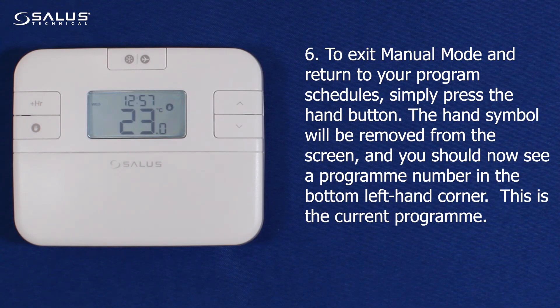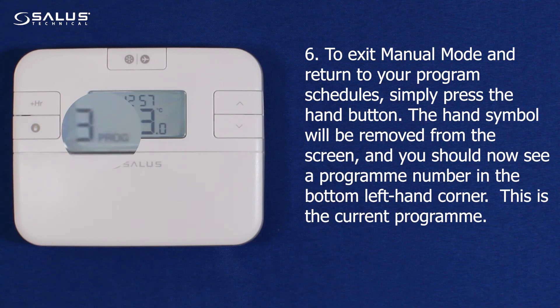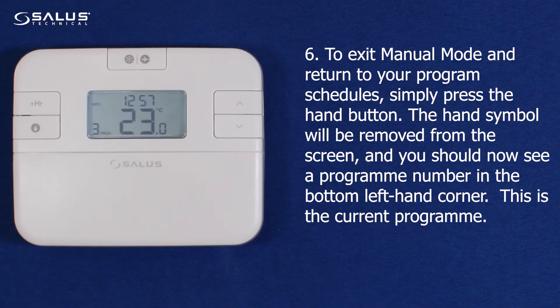Step 6: To exit manual mode and return to your program schedules, simply press the hand button. Step 7: The hand symbol will be removed from the screen, and you should now see a program number in the bottom left-hand corner. This is the current program.